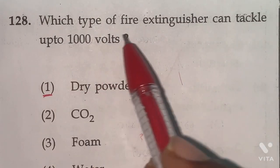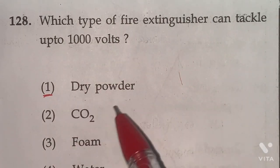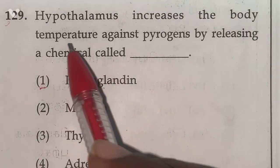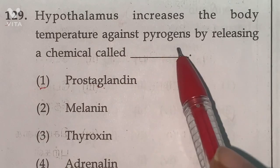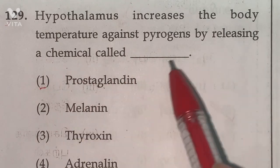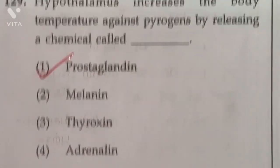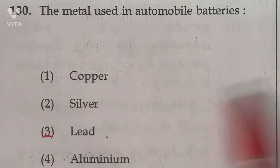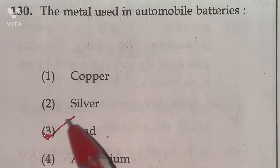128. Which type of fire extinguisher can tackle up to 1,000 volts? Dry powder. Option 1 is the right answer. 129th. Hypothalamus increases the body temperature against pyrogens by releasing a chemical called prostaglandin. So option 1 is the right answer. 130th. The metal used in automobile batteries, lead. Option 3rd one is the right answer.